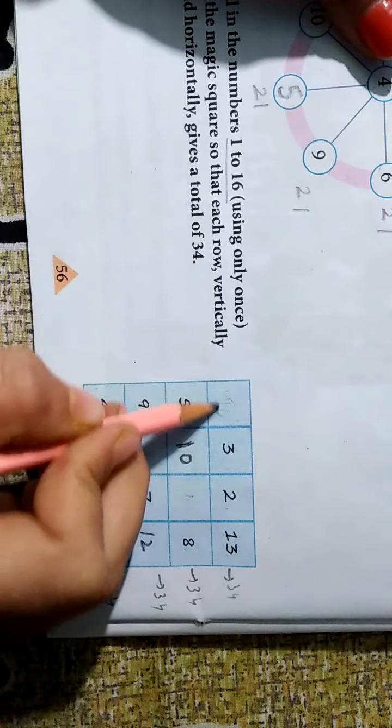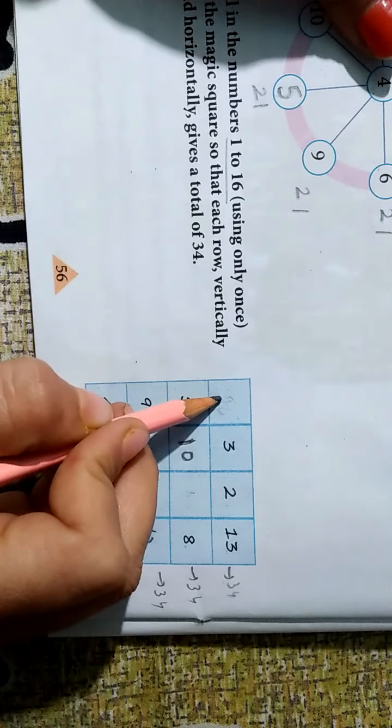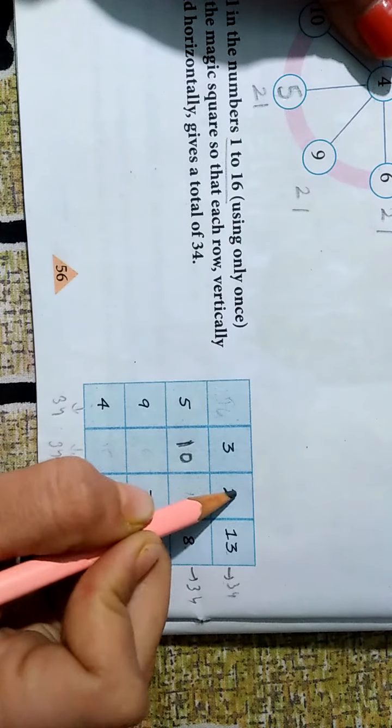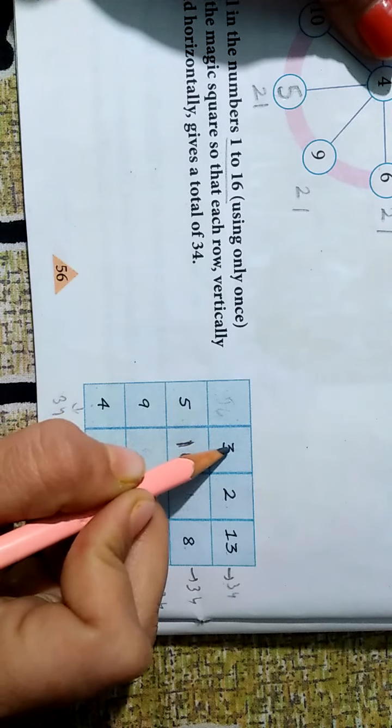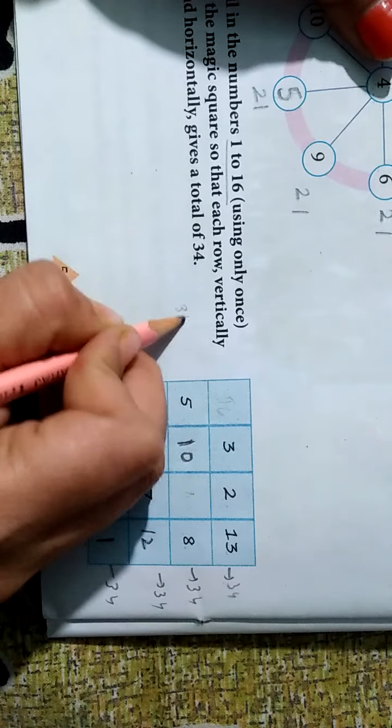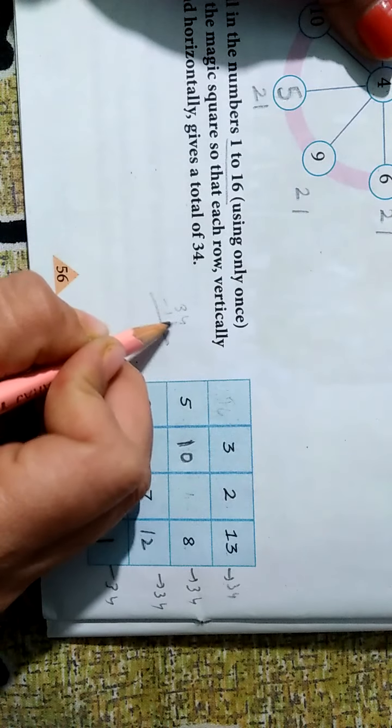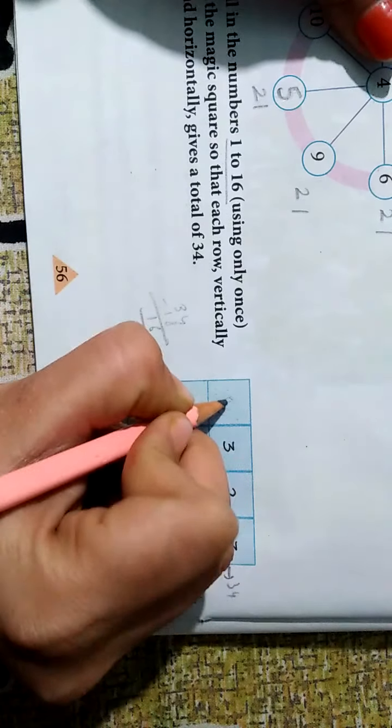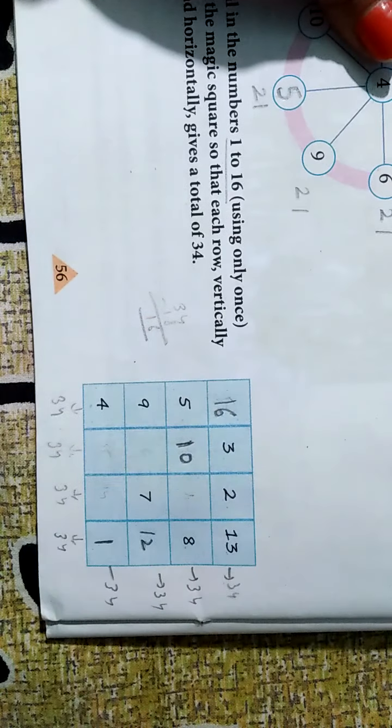Next. Ab ye to saare fill ho gaya. Ab isko dekho. Ek, do, teen. Yarni only one missing. To hum isko nikal lenge. Plus kariye. Thirteen, fourteen, fifteen, sixteen, seventeen, eighteen. Thirty-four minus eighteen kariye. Fourteen minus eight is six. Two minus one is one. Sixteen. To yahan pe aega sixteen.